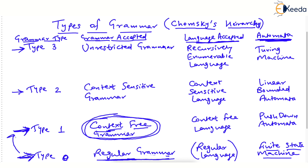As you go higher in the Chomsky hierarchy, more restrictions are removed. Type 3 grammar — which we have not yet seen — is called unrestricted grammar, where all restrictions are removed. Type 2 grammar is context-sensitive grammar, where some restrictions are removed but some remain. Type 3 has all restrictions removed, that's why it is known as unrestricted grammar.